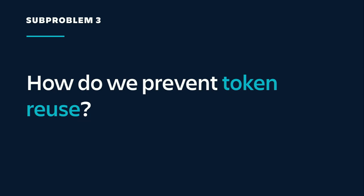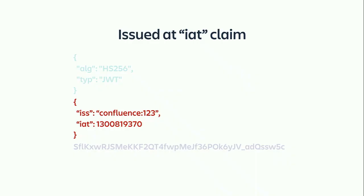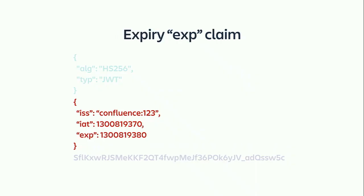How do we prevent token reuse? Suppose our token falls into the wrong hands — that nefarious, evil hacking robot. This token contains everything we need to authenticate and act on our behalf, so how do we limit the blast radius? We can use the standard issued-at and expiry claims to make sure the token doesn't last forever. Even if it gets captured by someone else, it can only last a certain time. These values are seconds since epoch — a Unix timestamp — where epoch is the 1st of January 1970.